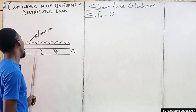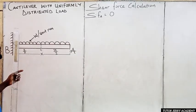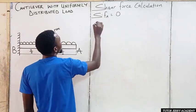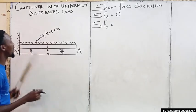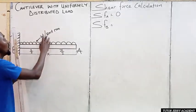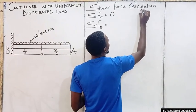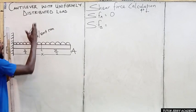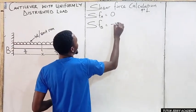The next thing is the shear force at B. Since this uniform distributed load is running across the whole span, the shear force at B — if you stand at point B, we have just one force, that is the force at the center, which is WX. Using the convention that upward force is positive and downward force is negative, the shear force at B is minus WX.